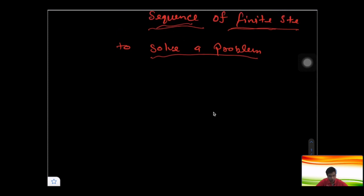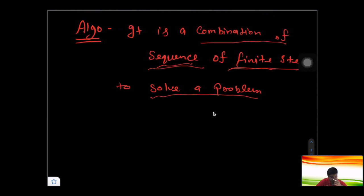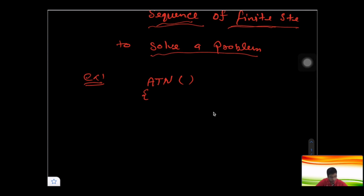Let's take an example of an algorithm to add three numbers. The first step is to take three numbers — suppose A, B, and C — which you want to add. This is Step 1.